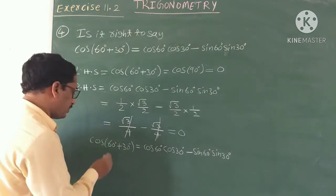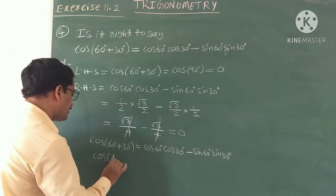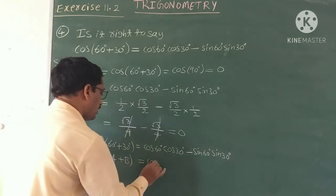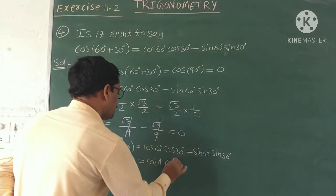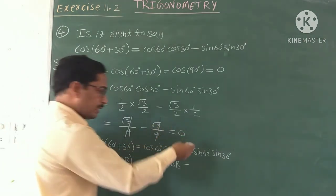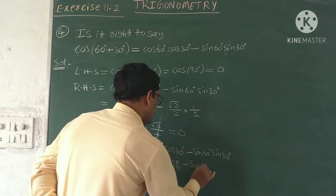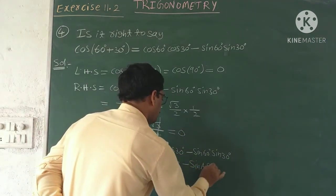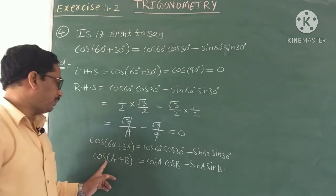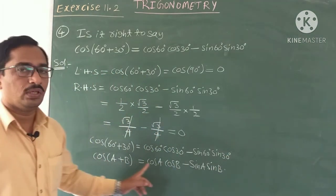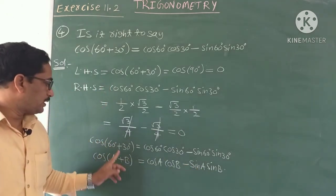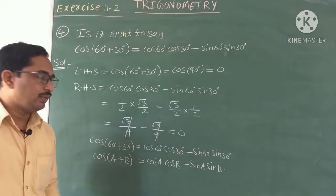Here we have the formula: cos(A + B) = cos A cos B − sin A sin B, with A = 60° and B = 30°.